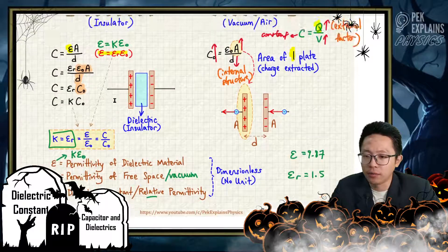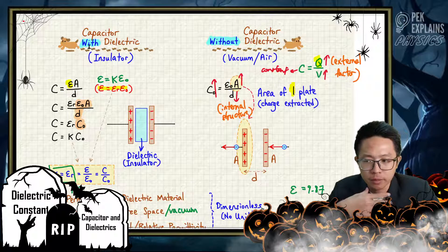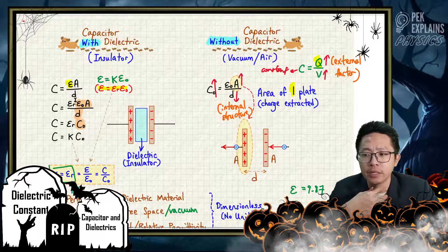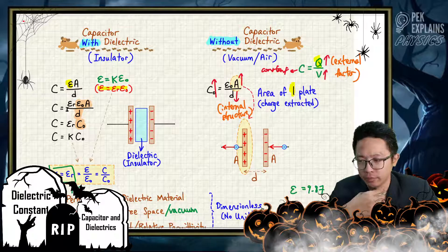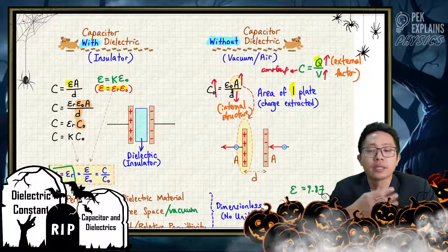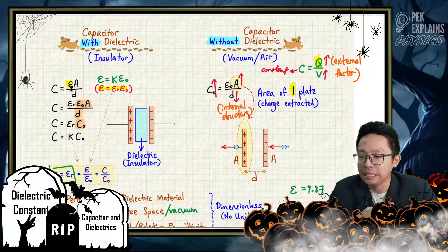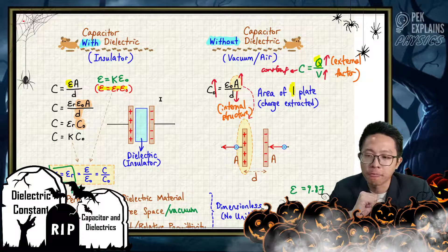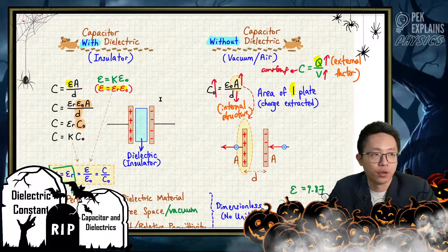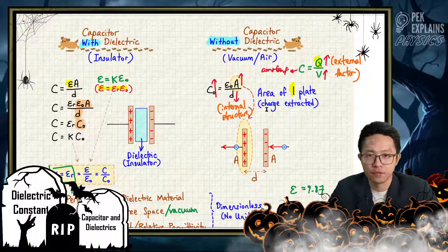So that's all for these two comparisons. Just remember: with dielectric, we write εA/D and substitute ε with εᵣε₀. Without dielectric, it is simply ε₀A/D. Let's move on to the next video.